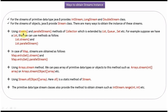Using the stream() method, we can create a sequential stream. Using the parallelStream() method, we can create a parallel stream. These two methods are introduced in Java 8 in the Collection interface. List, Queue, and Set interfaces are extending the Collection interface, so these two methods are available in List, Queue, and Set interfaces.